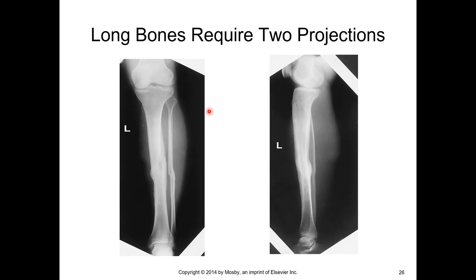Long bones, having relatively few joints, really only require two projections. This is a follow-up exam on the earlier image of the externally fixated comminuted tibia and fibula fracture that was malaligned. The malalignment continues here on the AP view.